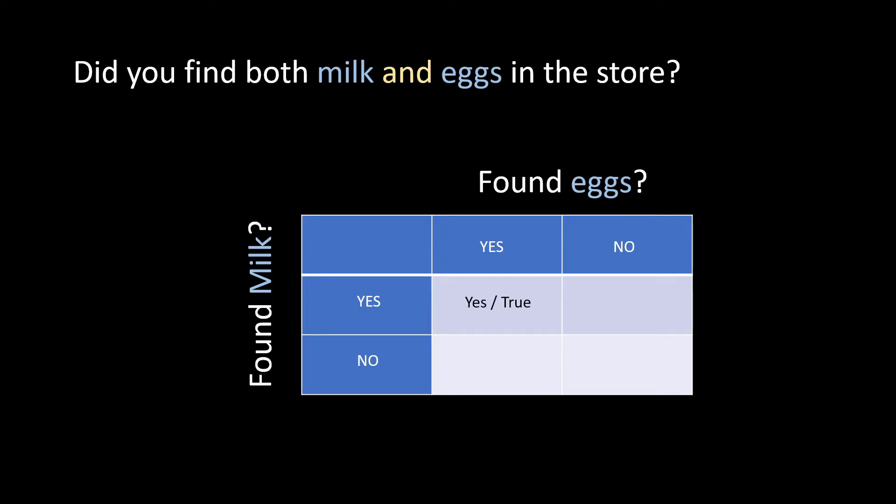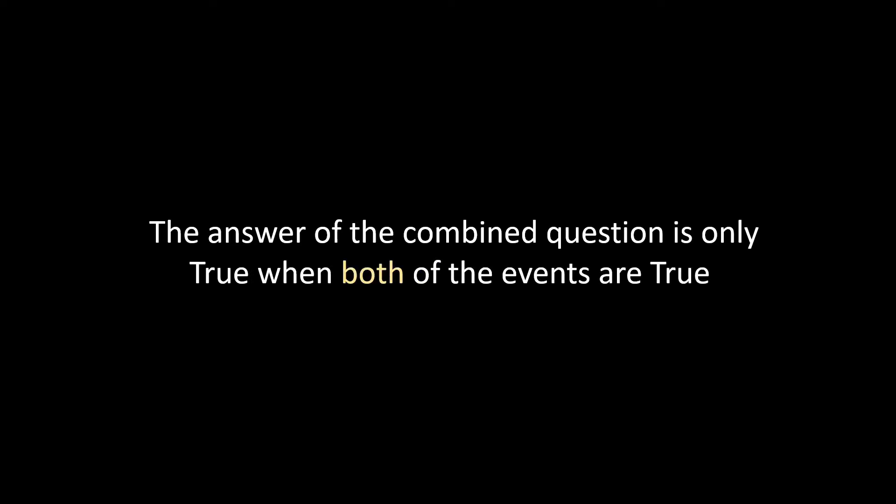If we found eggs and milk both, then the answer to the combined question would be yes or true in programming sense. In all other cases it will be no because one of the things that we are supposed to find was not available. In the last part where we didn't find neither eggs nor milk, the answer of the combined question will definitely be false. So the answer of the combined question is only true when both of the events are true.